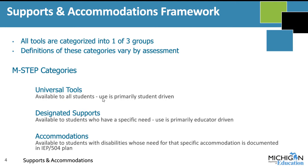Our next category, designated supports, is a little more stringent. These are things only available to students who have a specific need, and the use is primarily educator-driven. A group of educators has decided at the local level that a student would truly benefit from the support, and the student is using that support on a regular basis in the classroom. An example might be a bilingual word-to-word glossary for an English learner student — not all English learners need it, but some might benefit, and that decision must be made at the individual student level.